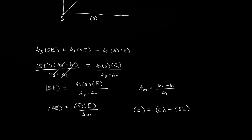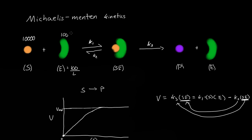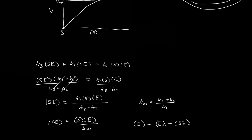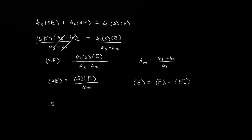To explain: if we initially have 100 enzymes, E is the number of free enzymes. During the reaction, some enzymes will have substrate in them — that's the enzyme complex. So the number of free enzymes equals the initial number of enzymes minus the number in the substrate-enzyme complex. Substituting, SE equals S times (E₀ minus [SE]) all over Km.